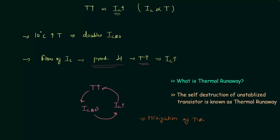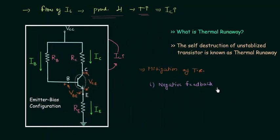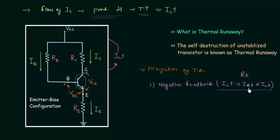How can we reduce the chances of thermal runaway in a transistor? The first way is the introduction of negative feedback. In the emitter bias configuration, we introduced the emitter resistance, and because of that if collector current increases, this will reduce the base current. When base current reduces, the collector current will also reduce because IC equals beta times IB. You may watch the emitter bias lecture linked in the description to understand this point in detail.